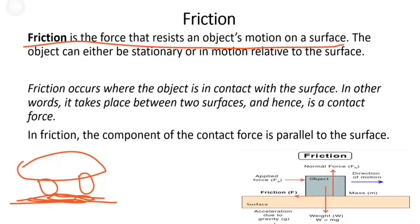In other words, friction takes place between two surfaces, making it a constant contact force. In friction, the component of the force is parallel to the surface. Here we have the snow and the floor, so the friction is parallel to the surface of the ground.